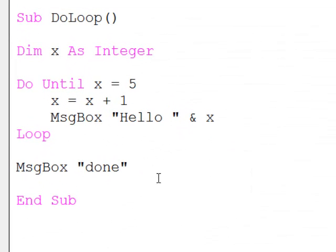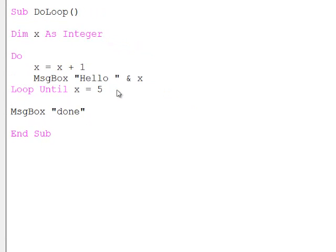The do loop comes in a number of different forms. I could for example move this test to the bottom of the loop. So I'm saying do these two lines of code and loop until x equals 5. As you'll see I get exactly the same effect.